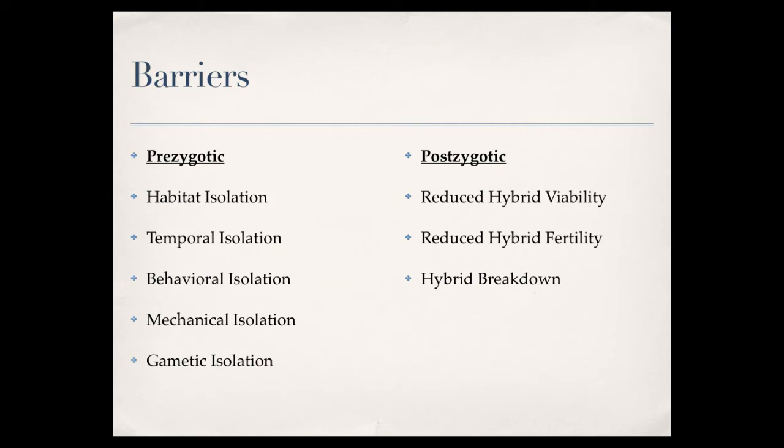If two animals do mate and produce a zygote, post-zygotic barriers can still prevent that hybrid from reproducing. Reduced hybrid viability means the hybrid is not healthy — it may be born, but it's not healthy enough to reproduce. Reduced hybrid fertility means the hybrid cannot reproduce at all. Two examples: the liger — a lion and tiger cross — has been produced in zoos, but ligers are sterile and cannot make more ligers. Similarly, mules — a donkey-horse combination — are also sterile. Hybrid breakdown refers to organisms that die quickly or are simply not healthy.